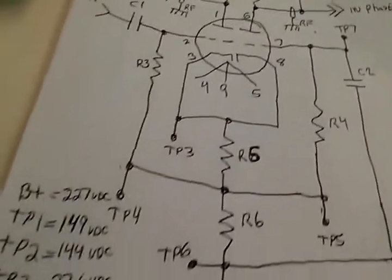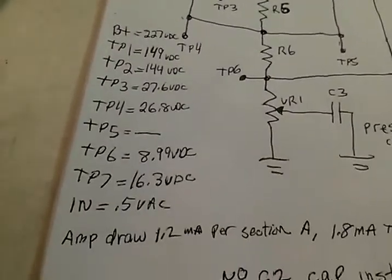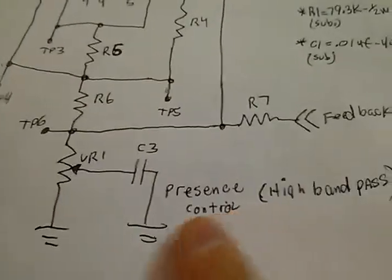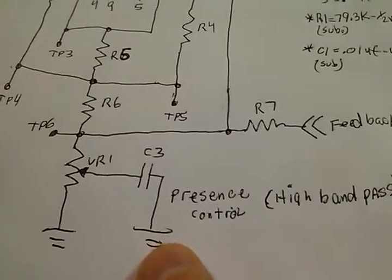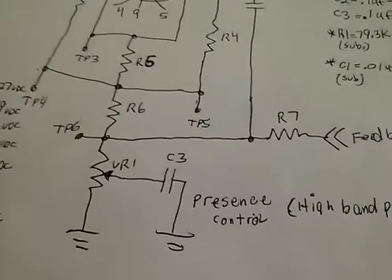The resistors we tried to keep similar to what they had. This was some of the initial readings here. The presence control, by the way, is also hooked up, and that's for the—this was actually a guitar inverter circuit they drew.